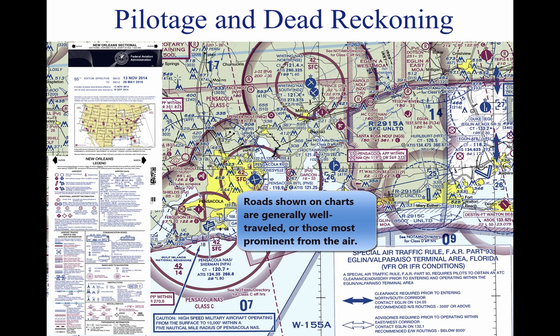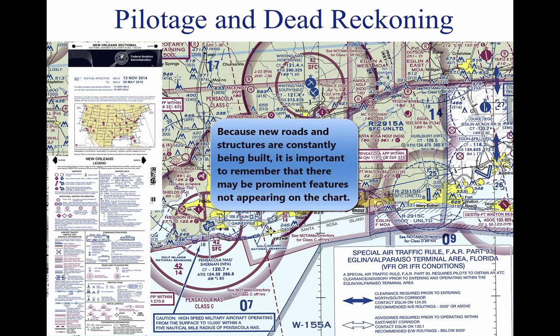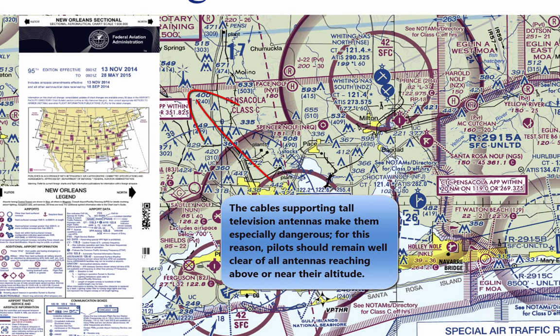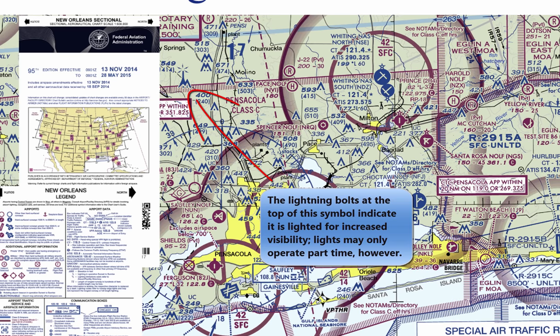Roads shown on the chart are primarily well-traveled roads or those most apparent when viewed from the air. New roads and structures are constantly being built and may not be shown on the chart until the next chart is issued. Some structures, such as antennas, may be difficult to see. Sometimes TV antennas are grouped together near a town and are supported by almost invisible guy wires. Never approach an area of antennas less than 500 feet above the tallest one. Most taller structures are marked with strobe lights, but some weather conditions or background lighting may make them difficult to see.